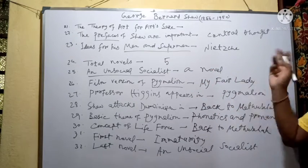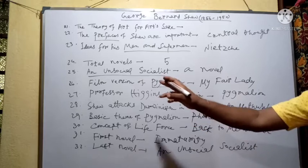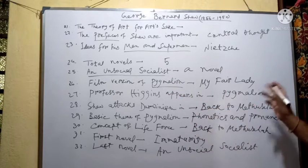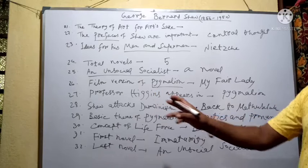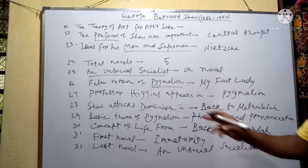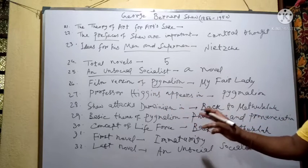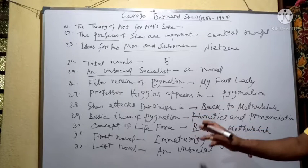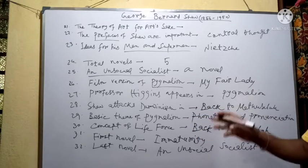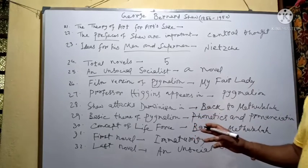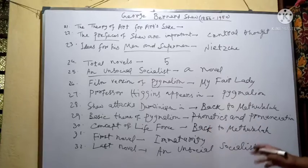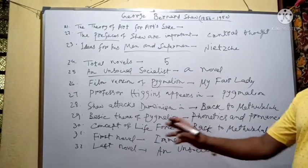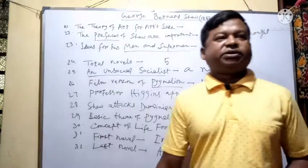An Unsocial Socialist is a novel. Film version of Pygmalion is My Fair Lady. Professor Higgins appears in Pygmalion. Shaw attacks Darwinism in Back to Methuselah. Basic theme of Pygmalion is phonetics and pronunciation. Concept of Life Force is best enunciated in Back to Methuselah. First novel: Immaturity. Last novel: An Unsocial Socialist.